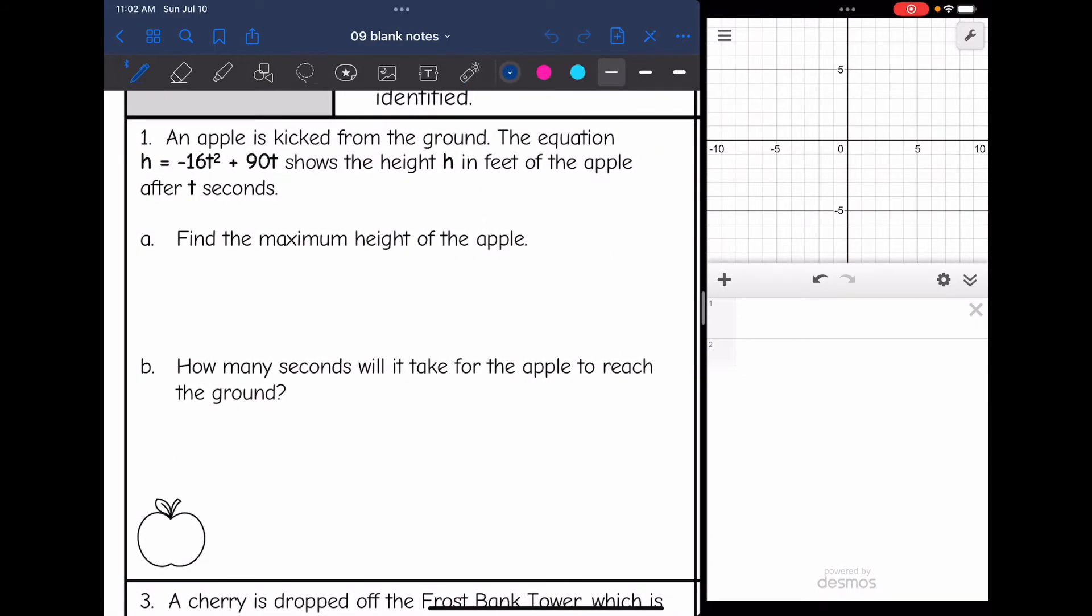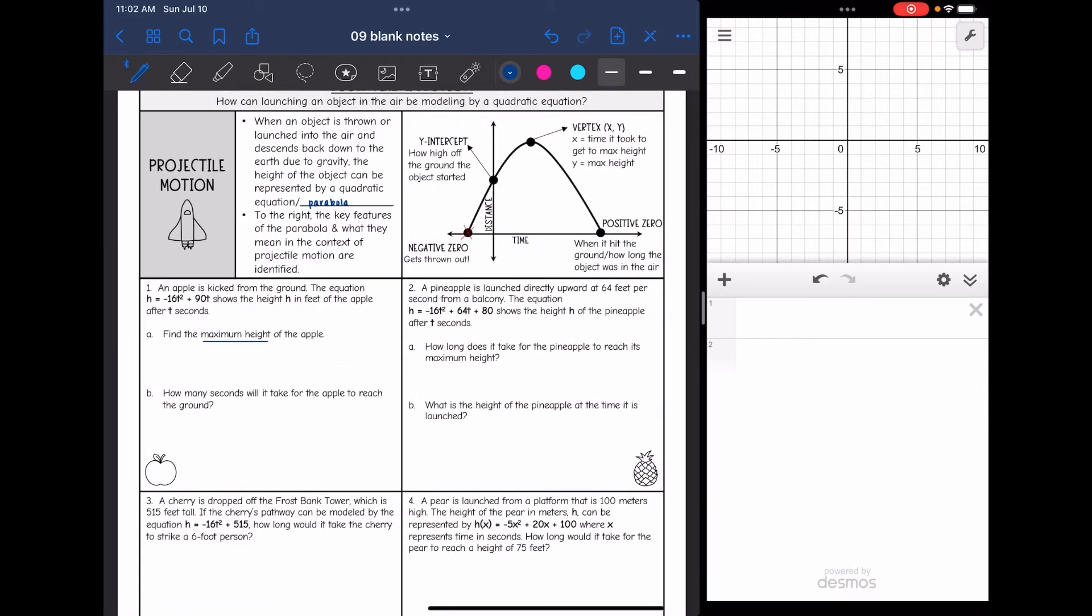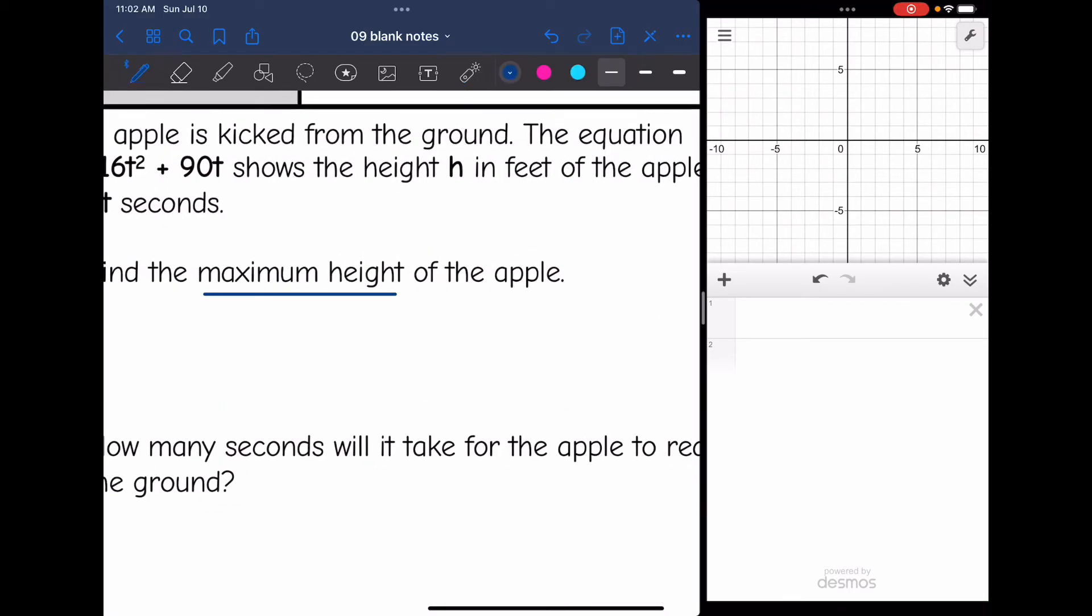An apple is kicked from the ground. The equation h = -16t² + 90t shows the height h in feet of the apple after t seconds. Find the maximum height of the apple. They're wanting us to find the y value of the vertex. The maximum height of the apple means I'm trying to find the y value of the vertex.